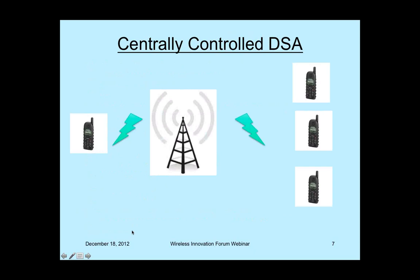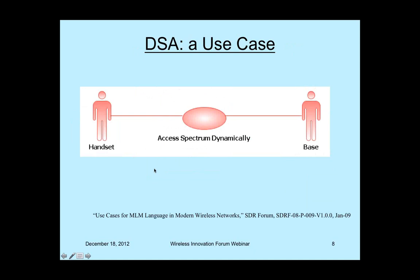I'd like to discuss the scenario of central control of spectrum. In this picture, the base station makes spectrum assignment decisions — it can check which parts of the spectrum are occupied by particular handsets or users and then decide what to assign. This use case was discussed at the Wireless Innovation Forum in detail and is described in a publicly available SDR Forum document covering seven or so use cases for the use of cognitive radio and policies.